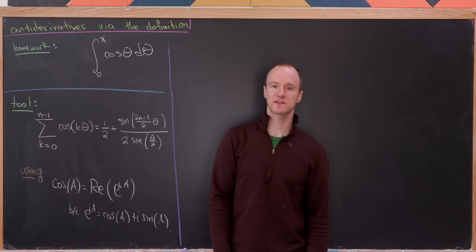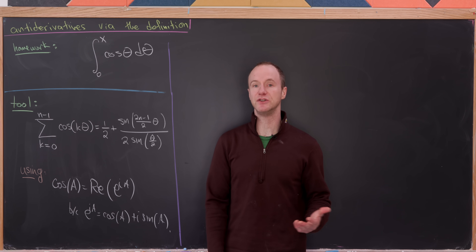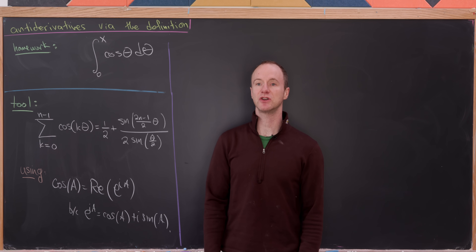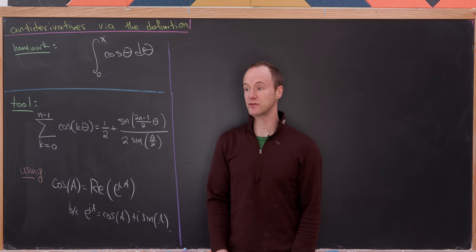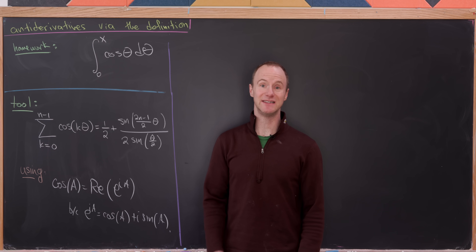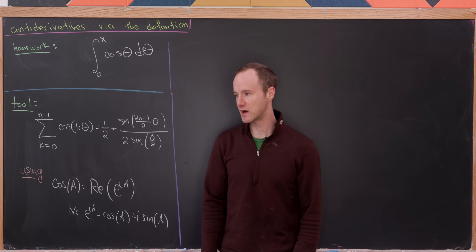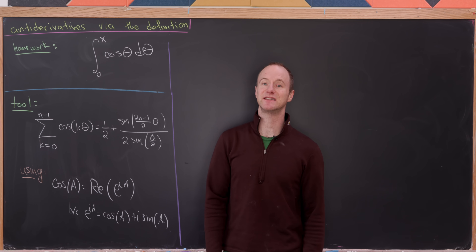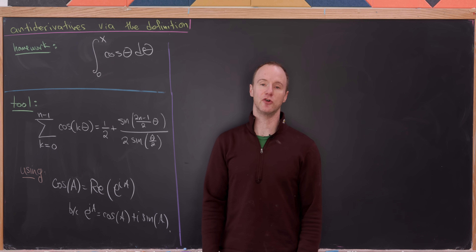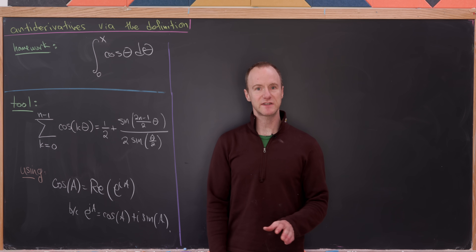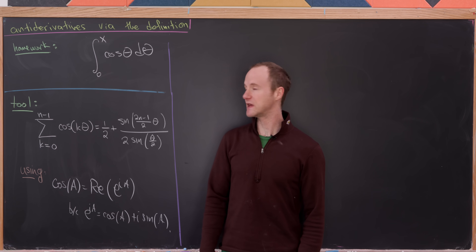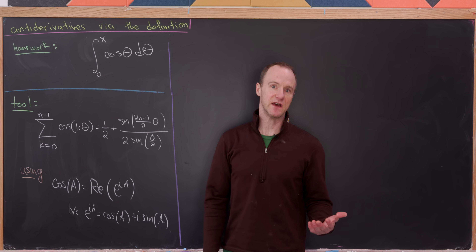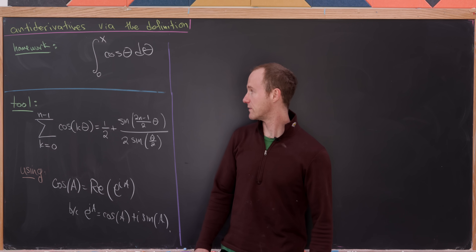Whenever I'm teaching a first semester calculus class, near the end we get around to doing some integration. For the first day of integration, we often calculate a couple of integrals using the definition via a limit of Riemann sums. But those integrals are generally very simple low-degree polynomial functions. Today I'd like to do an example where we calculate an antiderivative of cosine via this limit of Riemann sums.